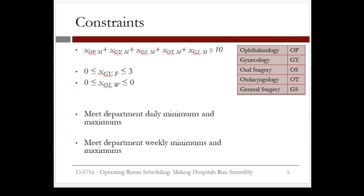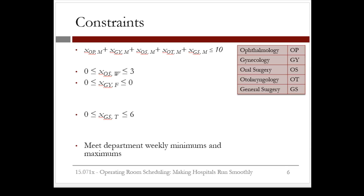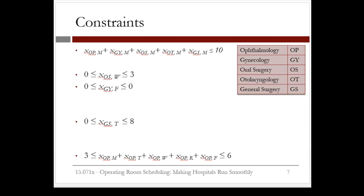The next set of constraints is that we must meet department daily minimums and maximums. For example, the general surgery department on Tuesday requires between 0 and 6 operating rooms. We would have a similar constraint for every department and every day of the week. We also need to meet department weekly minimums and maximums. For example, the ophthalmology department has a minimum of three and a maximum of six operating rooms that it needs in any given week.